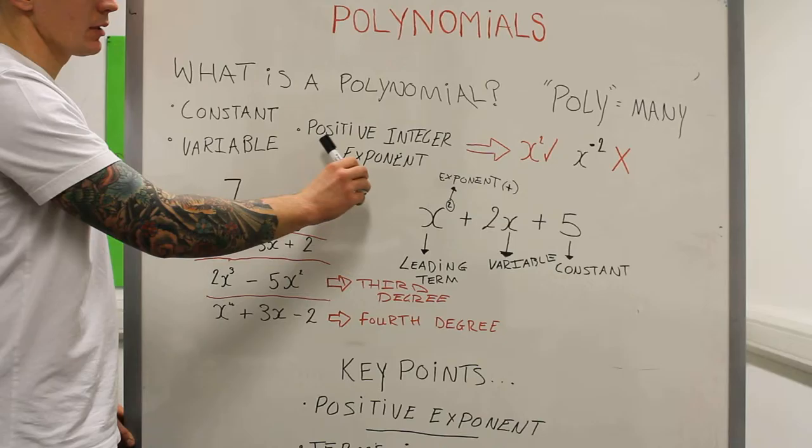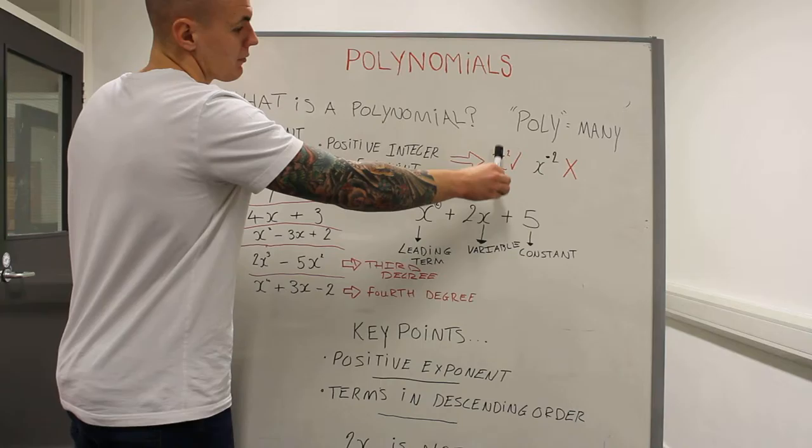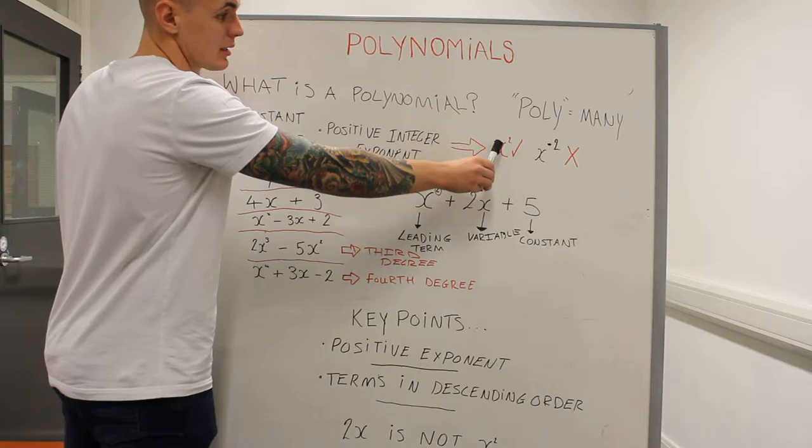What is a polynomial? A polynomial is an expression that consists of a constant, a variable and a positive integer exponent that can all be combined using addition, subtraction and multiplication.